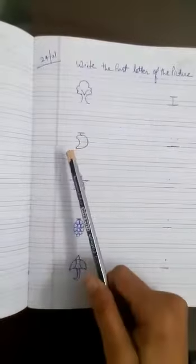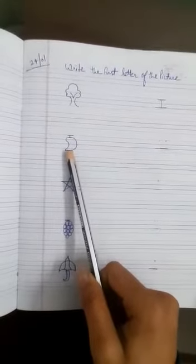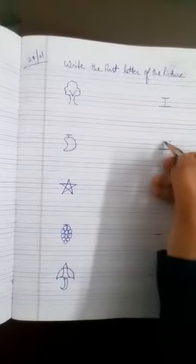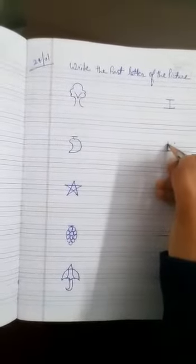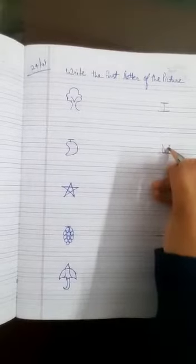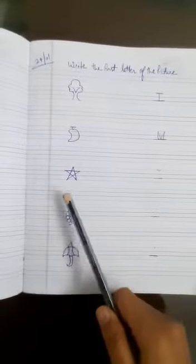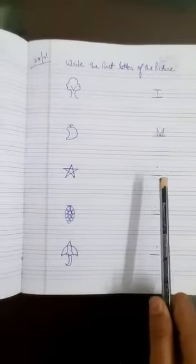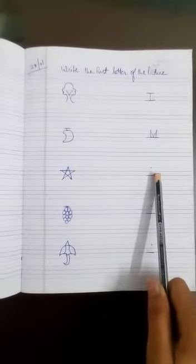Next is Mango. M, Mango. So write here M. Next is Star. S, Star. So write here S.